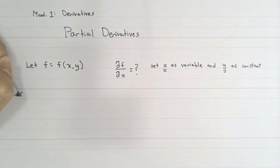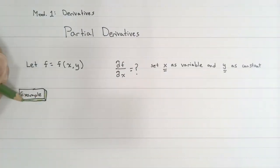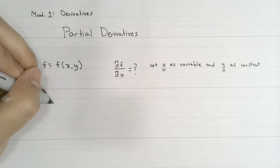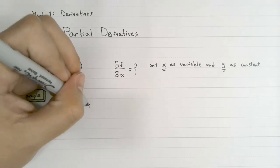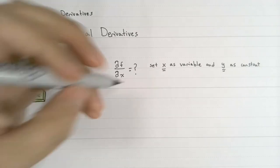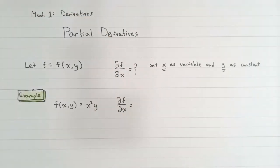For example, suppose that f is a function defined as x squared times y. And let's say that we want the partial derivative of f with respect to x. In this case, we can treat y as any constant. And because y is a constant, then our derivative simply becomes 2x times y.